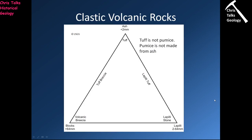When it comes to classifying our pyroclastic or volcanoclastic rocks, we use a triangular diagram. We have ash at one end of the scale, lapilli at another, and blocks at the third. Most volcanoclastic rocks are dominated by ash and lapilli, so most of them will fall somewhere along the ash-lapilli line.